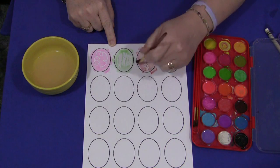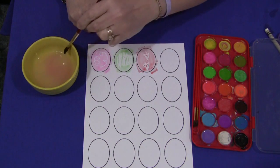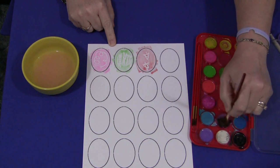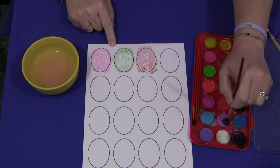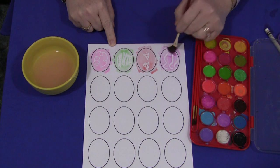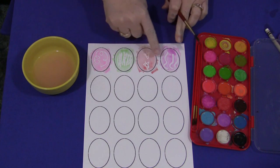And so this one we did stars here. And I'll just do one more so you can kind of get the general idea of the crayon resist on these. On each one of these eggs you can clearly see where I have drawn.